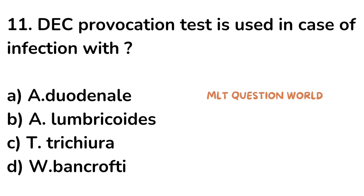Question number 11. DEC provocation test is used in case of infection with: option A. Ancylostoma duodenale, option B. Ascaris lumbricoides, option C. Trichuris trichiura, option D. Wuchereria bancrofti. The right answer is option D, Wuchereria bancrofti.